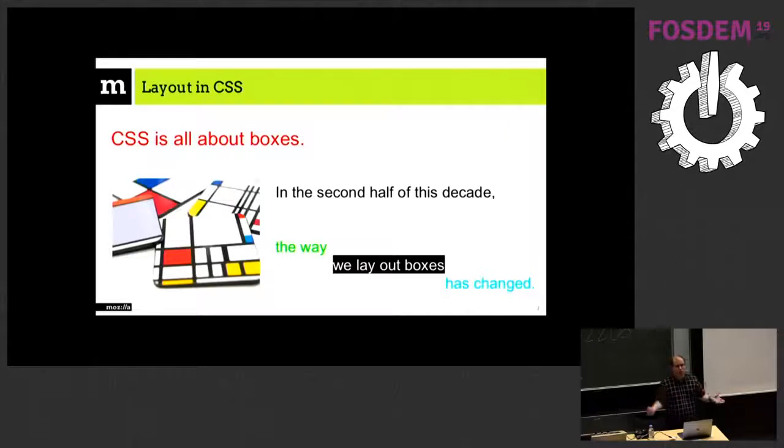CSS is all about boxes. The goal of CSS is to take boxes of different shapes, change their shapes, put rounded corners, change the color, and put them somewhere on your screen or on print. That's the idea of layout. In fact, the way we are doing this is changing. We still have to put boxes on the screen and make them interact together, and the way we do this is different in the second half of the second decade of the century than it was in the end of the 90s when CSS was created.